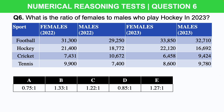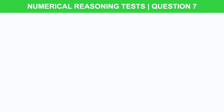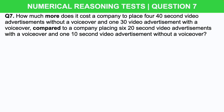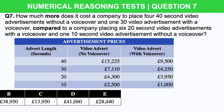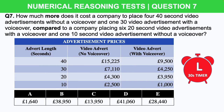You're doing really well — let's look at one more question before moving on to a totally different type of Network Rail assessment. This question is a bit more tricky: how much more does it cost a company to place four 40-second video advertisements without a voiceover and one 30-second video advertisement with a voiceover, compared to a company placing six 20-second video advertisements with a voiceover and one 10-second video advertisement without a voiceover? Take a look at the chart. Here are your answer options and you have 30 seconds starting now.